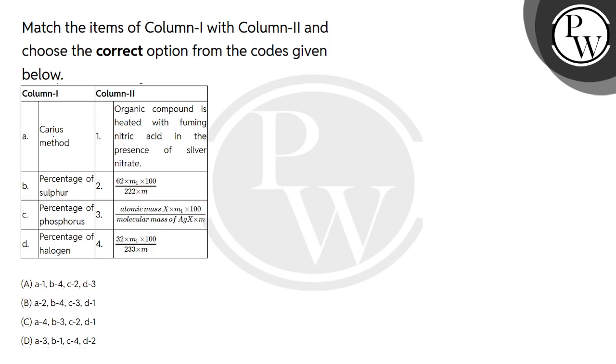In the first column, you have written the Carius method. In A, we have written the Carius method. The Carius method is used for halogens and sulfur estimation.